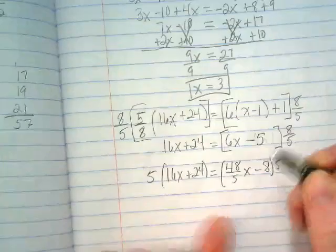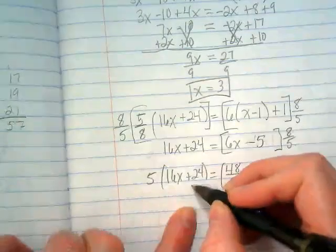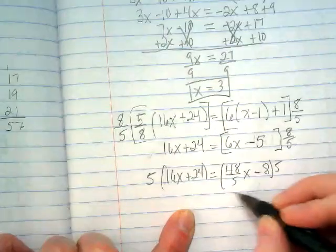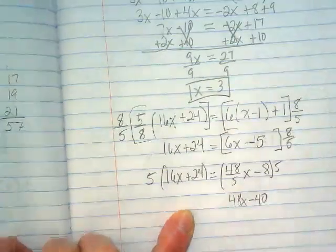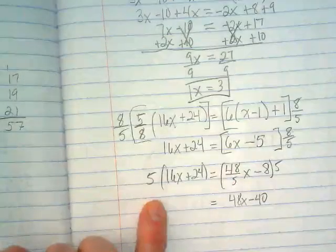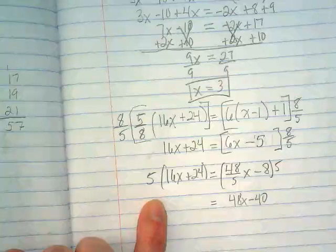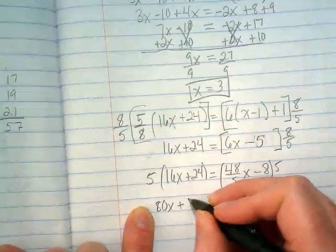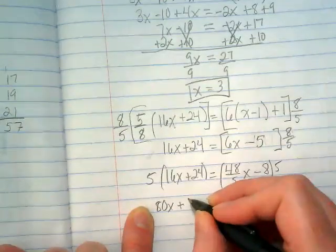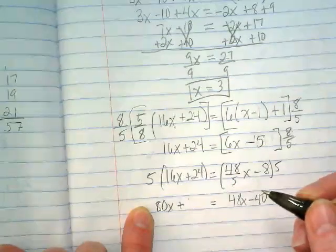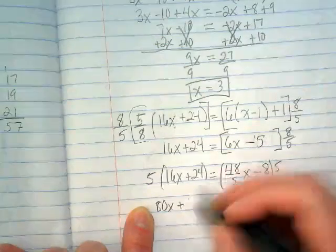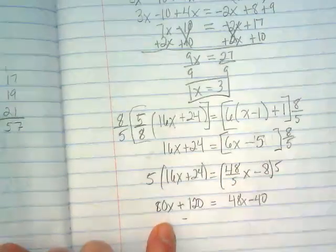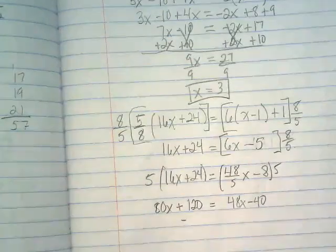And we are about to run out of time. 5 times 16 plus 24. I'll finish this and put a picture on Classroom so you guys can look at it later. But we're going to end up with 48x minus 40. Is that what 16 times 5 is? 80? And I'm trying to do 24. 25 times 5 would be 125. So it's going to be 120. I have to be at a meeting at 11:45.